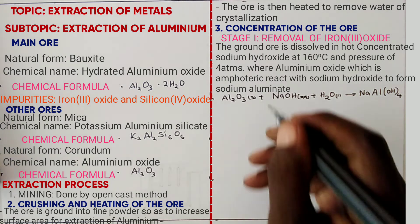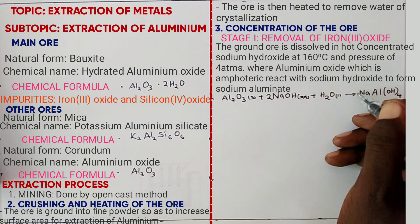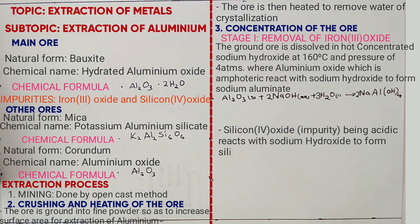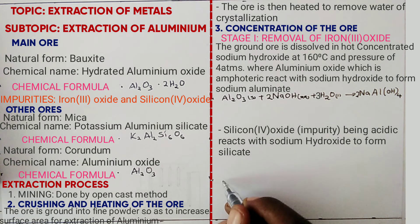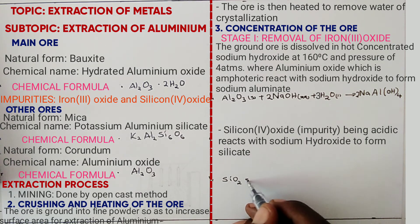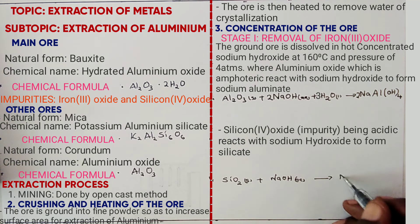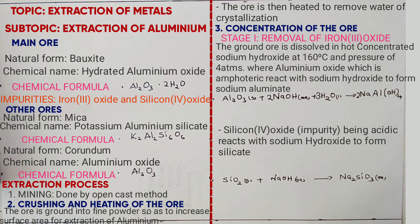To balance the equation, place 2 here and 2 here. Silicon(IV) oxide, which is an impurity and an acidic oxide, dissolves in sodium hydroxide to form sodium silicate. The equation is: SiO2(s) + NaOH(aq) → sodium silicate(aq) + H2O(l).